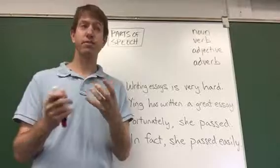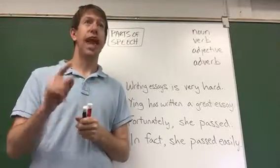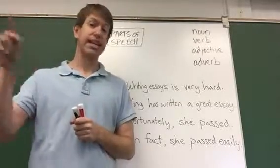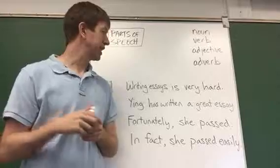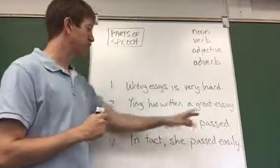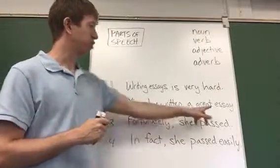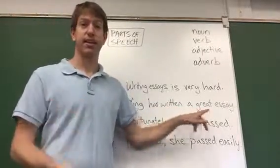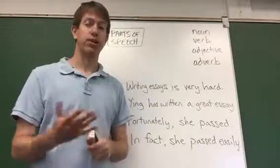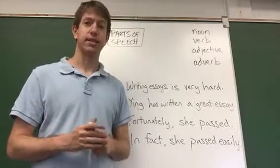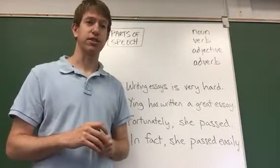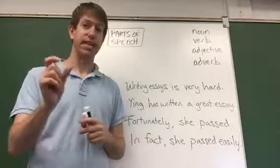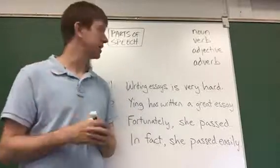Adjectives — sometimes in English you can add '-er' or '-est' on the end of an adjective. So 'great' could be 'greater' or 'greatest.' That's one way to check to see if you have an adjective. However, be careful because not all adjectives take '-er' or '-est.'